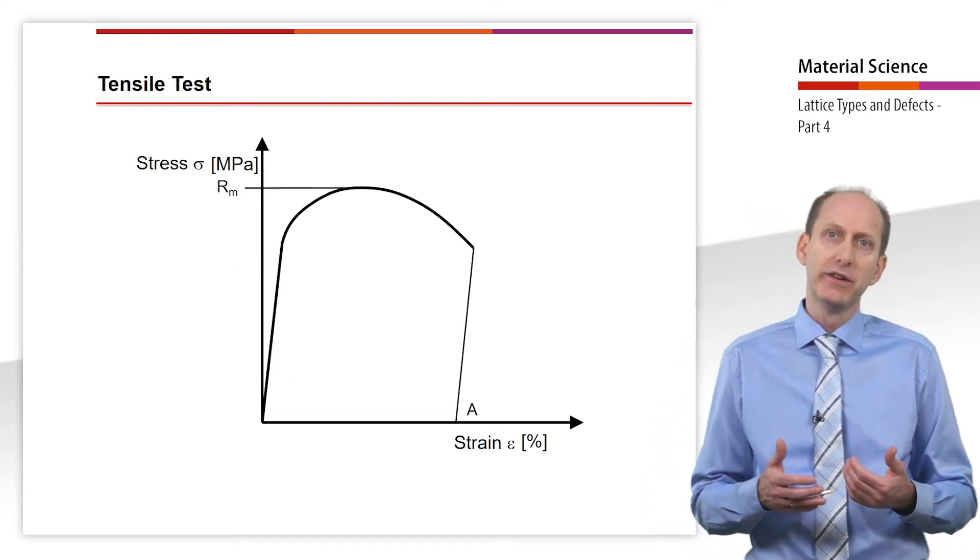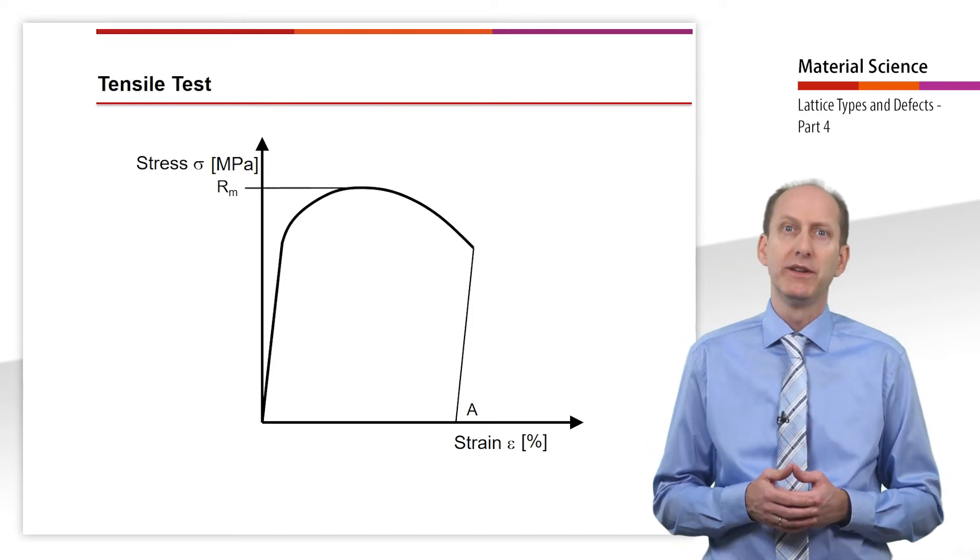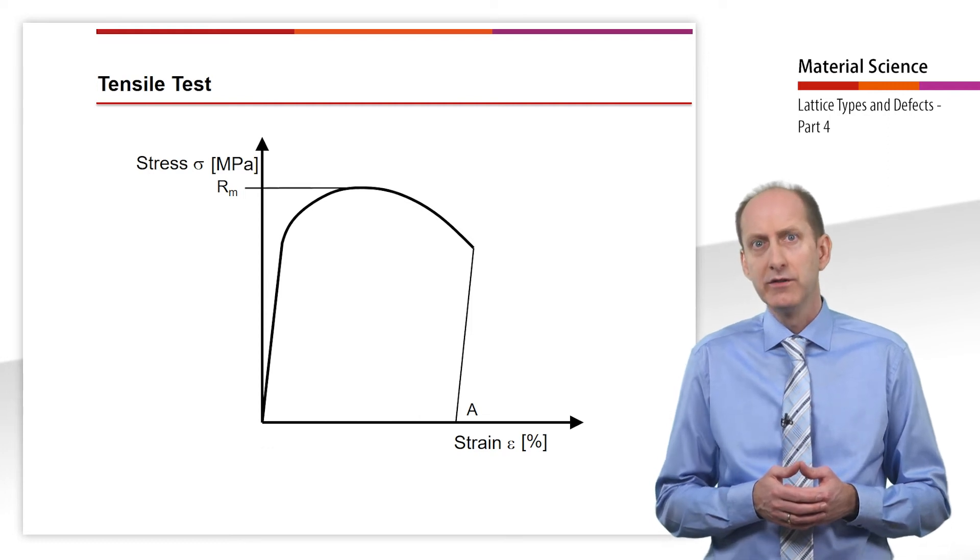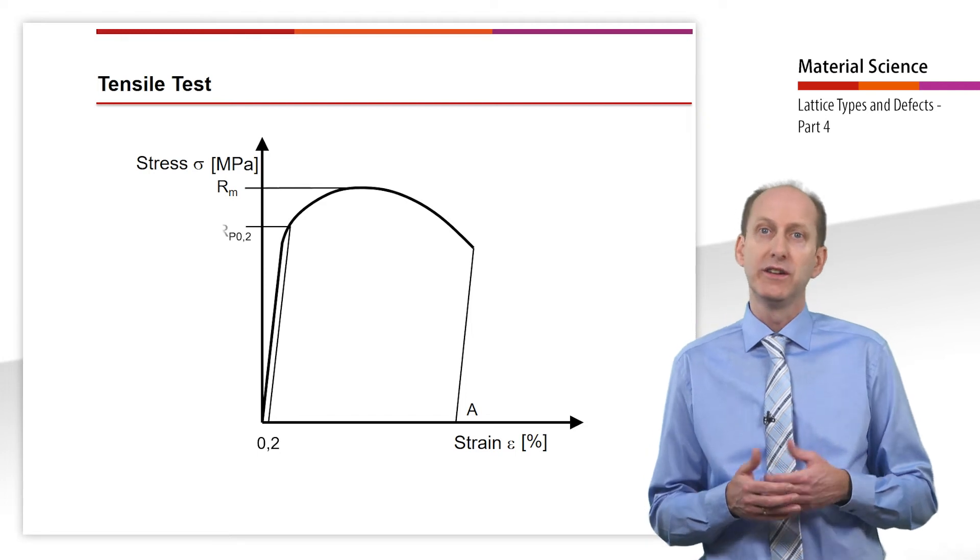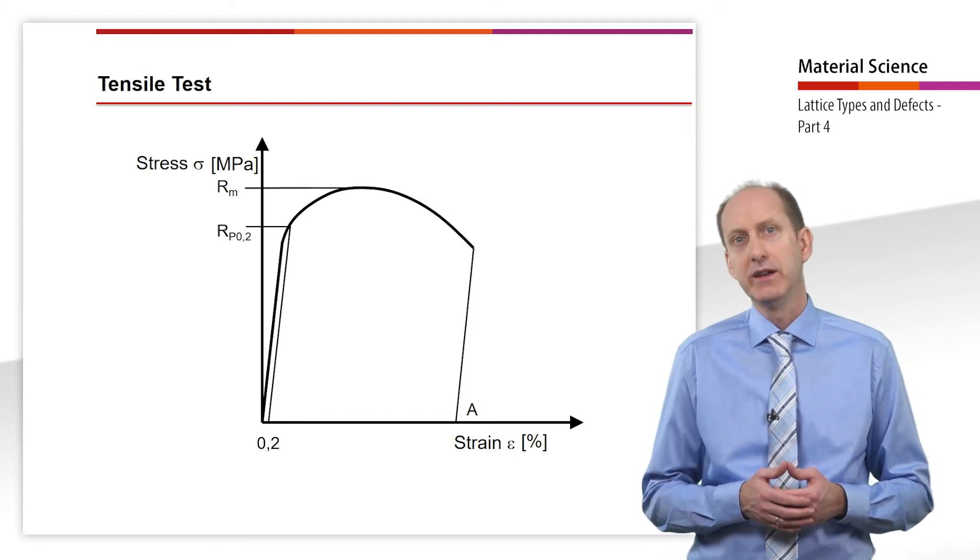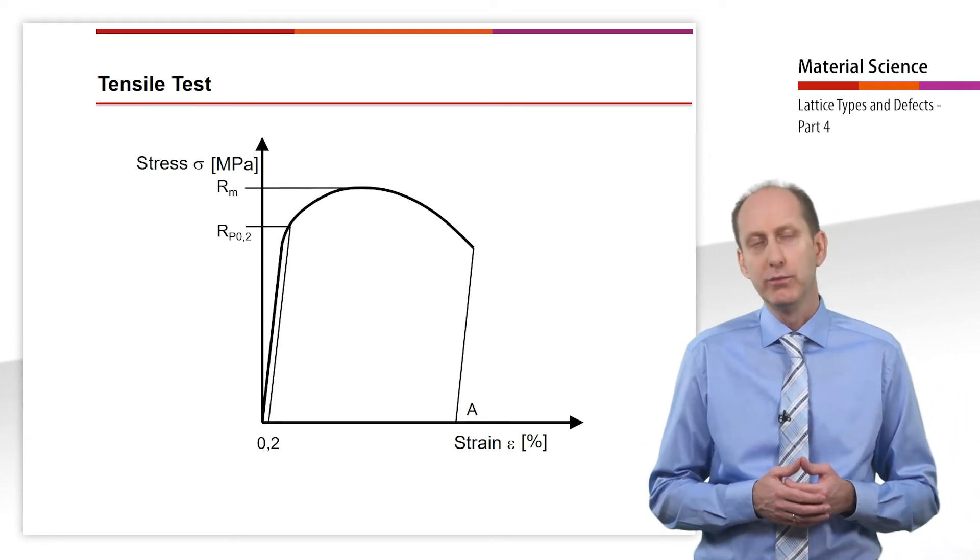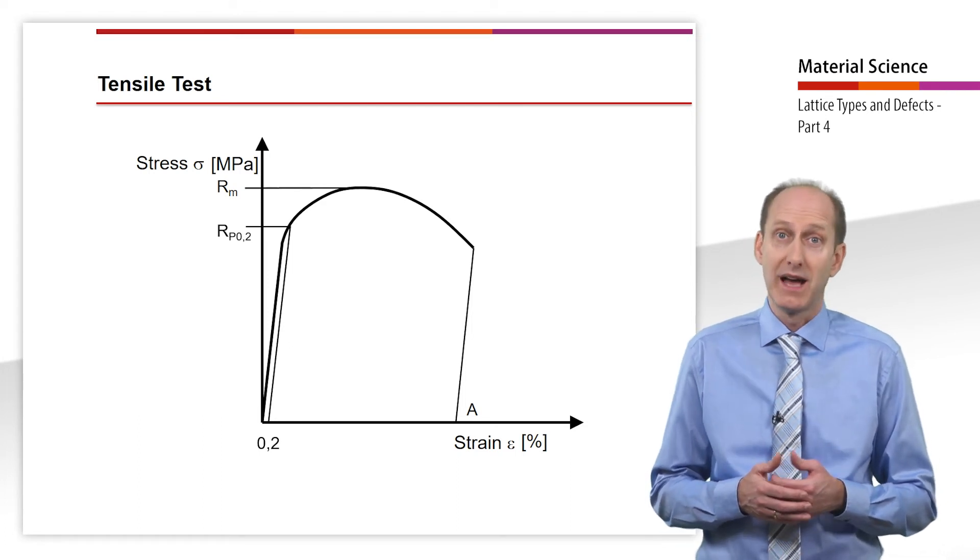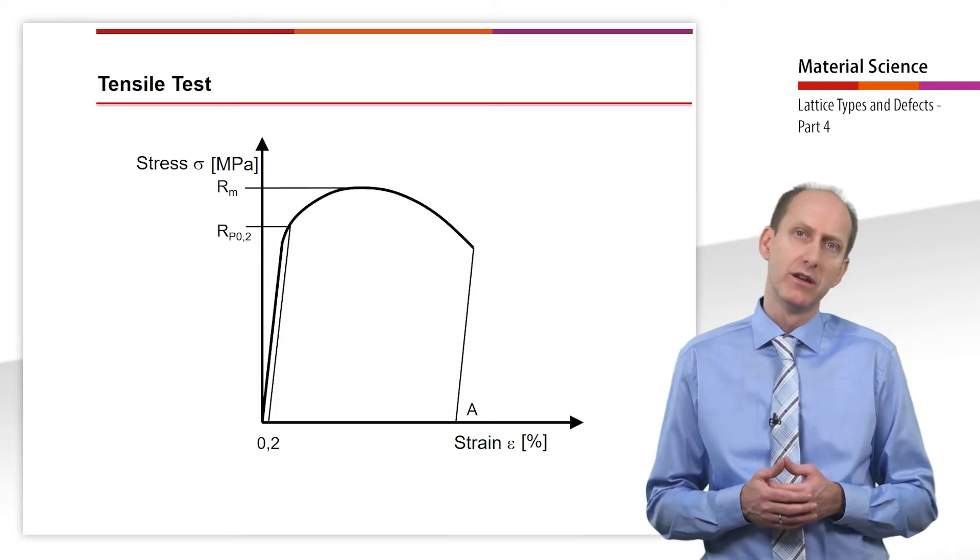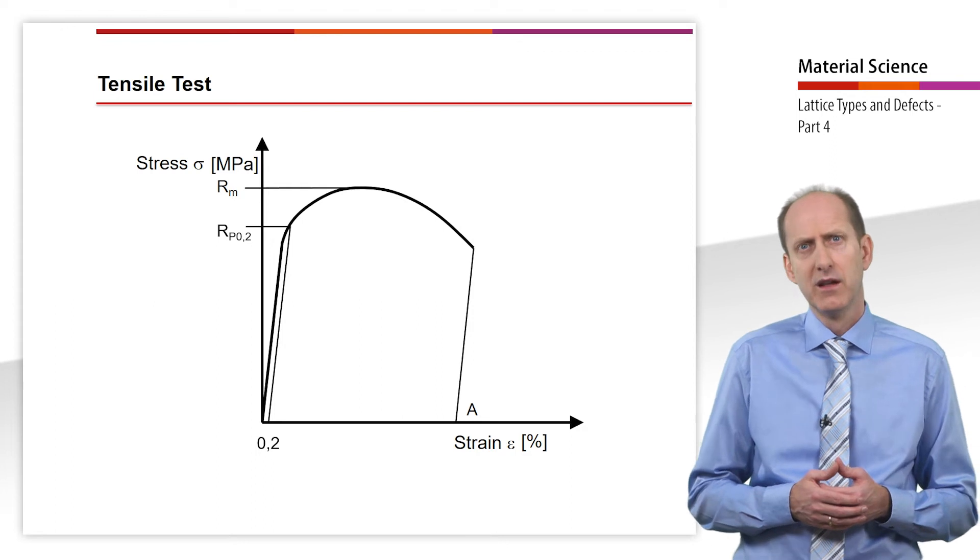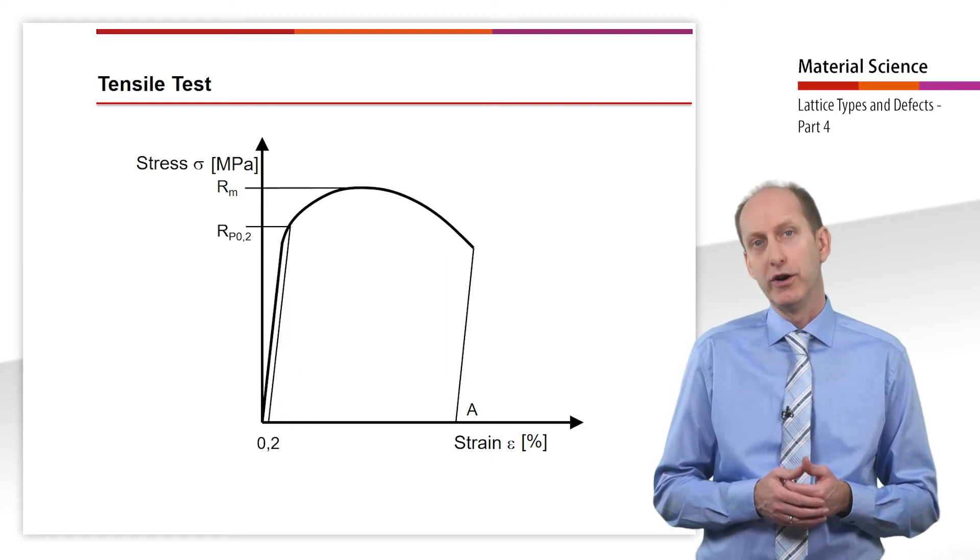If the test material doesn't show a clear yield strength, that is, there is not a distinct drop in the stress at the end of Hooke's straight line, the so-called 0.2% RP 0.2 offset yield strength, also called proof stress, is determined. According to the standard, the yield strength of 0.2% is graphically determined by a line parallel to Hooke's straight line at a distance of 0.2% from the original gauge length. The point of intersection with the stress-strain diagram is the stress RP 0.2.